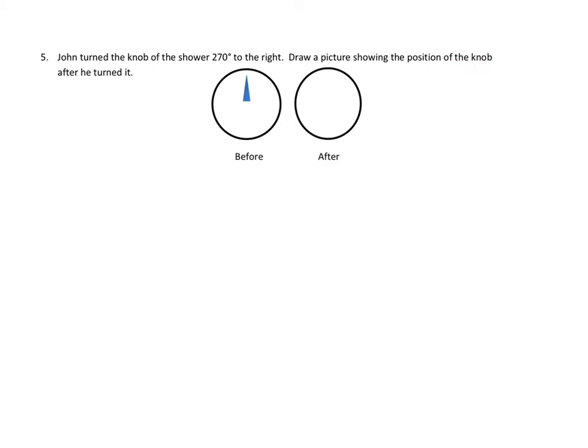Okay. Well, we could do this a couple of different ways. I want to do one first out loud, and then I want to do a second one with my actual protractor. Let's take a look at what they're saying. 270 degrees to the right.